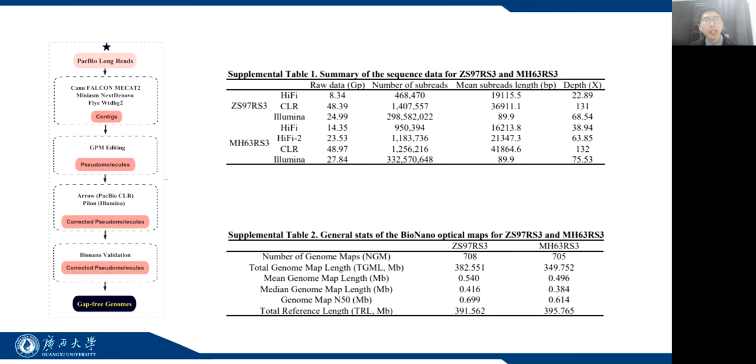The assembled contigs were then merged using quickmerge. Finally, two gap-free reference genomes were generated.